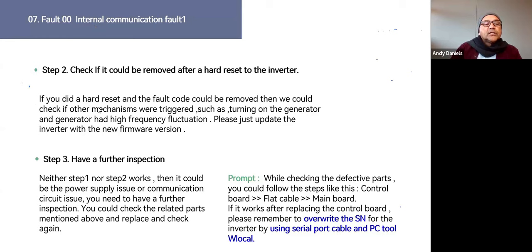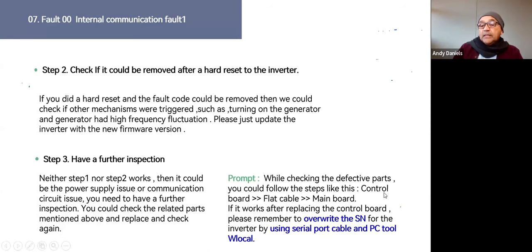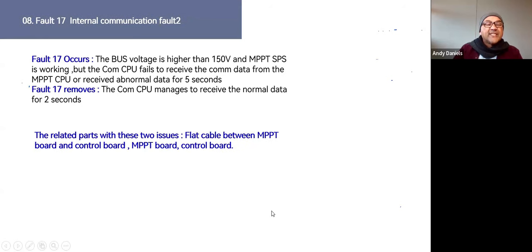For fault 00, check if it can be removed after a hard reset of the inverter. If not, check for other triggered mechanisms such as a generator with high frequency fluctuation — then update the firmware or roll back to the previous version. If neither step works, it could be a power supply or communication circuit issue requiring further inspection, and the machine must come in for a control board replacement. Remember to overwrite the default serial number with the inverter's serial number on the side.